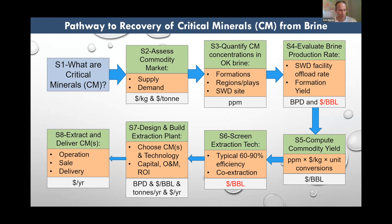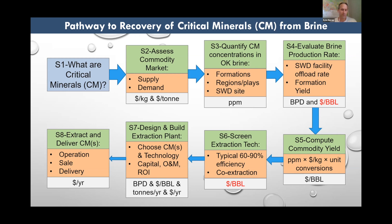So what is the pathway to recovering critical minerals from produced water? I've tried to simplify it into eight steps or stages in a flow chart form, highlighting some of the action items and topics that need to be addressed in each step. We start with answering what critical minerals are and defining related terms, then quantify concentrations, masses, volumes, and dollar values along the pathway. I'll walk through steps one through five and give two example elements, hopefully showing the potential to develop critical minerals in Oklahoma as part of an ongoing produced water treatment and reuse project.